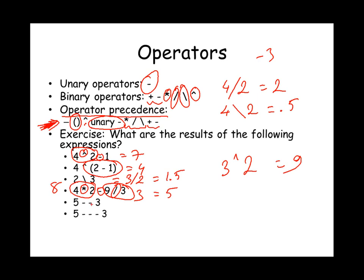A unary negation sign negates the number following it. So in 5 minus (-3), the unary negation makes minus three, and subtracting that from five gives eight. In the last example, minus negative three is negated again to give plus three, and the last minus sign is a subtraction, so five minus three gives two.